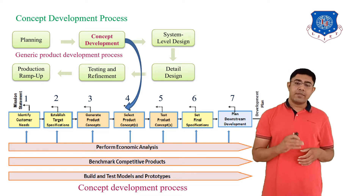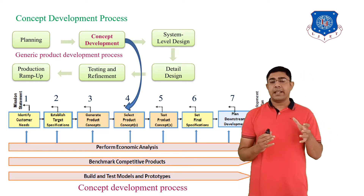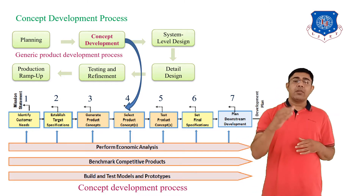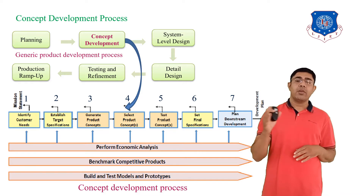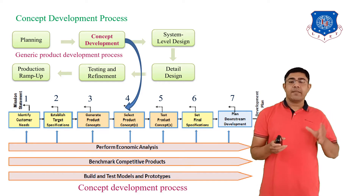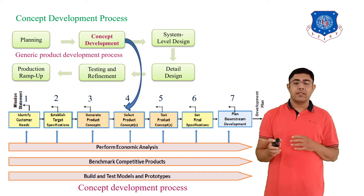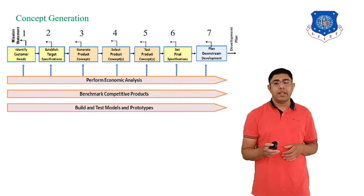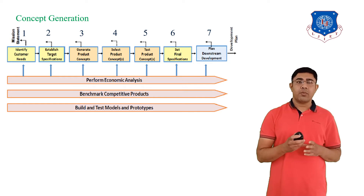Step six is to set the final specifications. And then we go for the plan developments. The output of the concept development process is the development plan. In the concept development process, the third step is to generate the product concept, and next we learn concept generation.